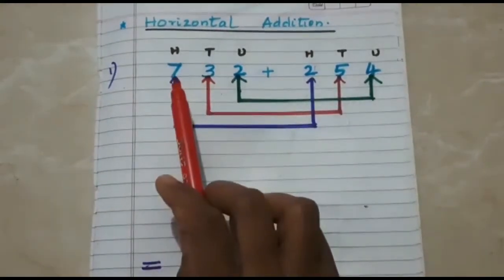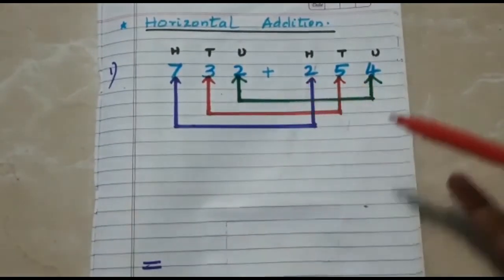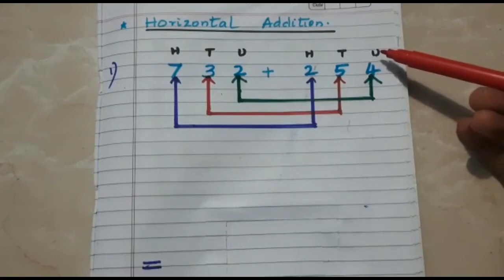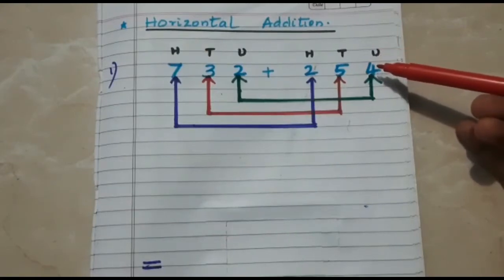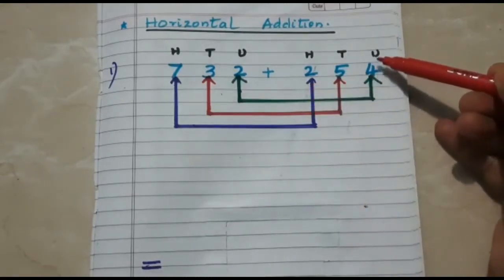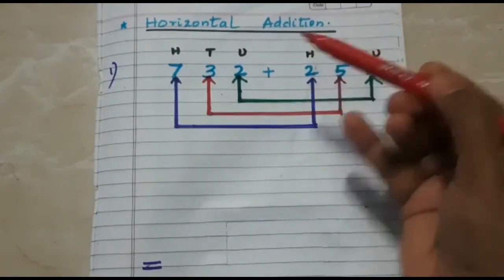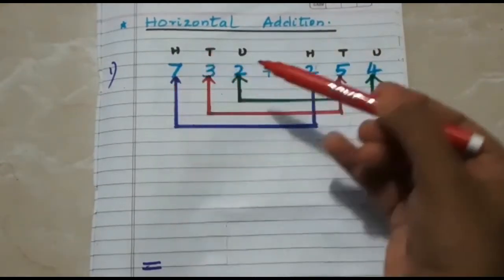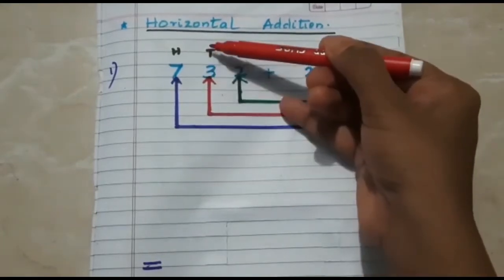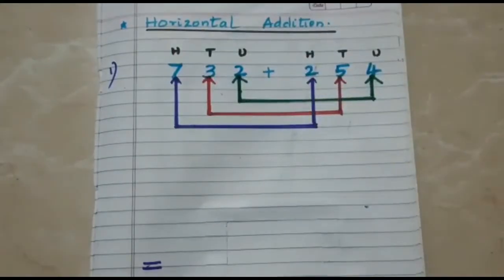See children, here it is 732 plus 254. What I have written over here on the top of these numbers are the place values of the respective digits. In 254, the place value of 4 is units, the place value of 5 is tens, and the place value of 2 is hundreds. In 732, the place value of 2 is units, the place value of 3 is tens, and the place value of 7 is hundreds.